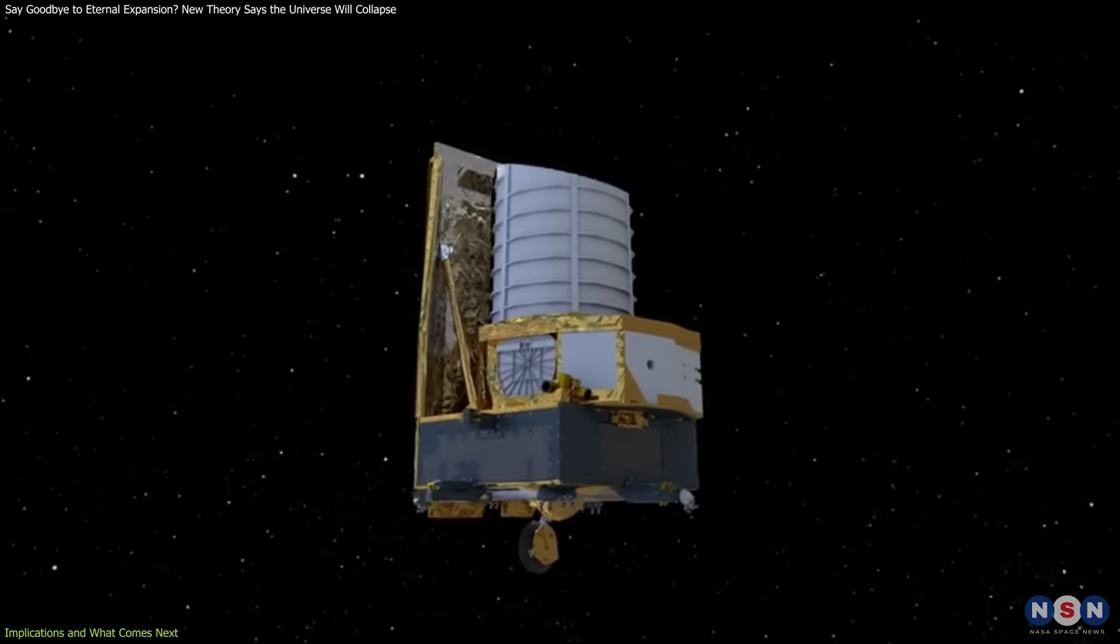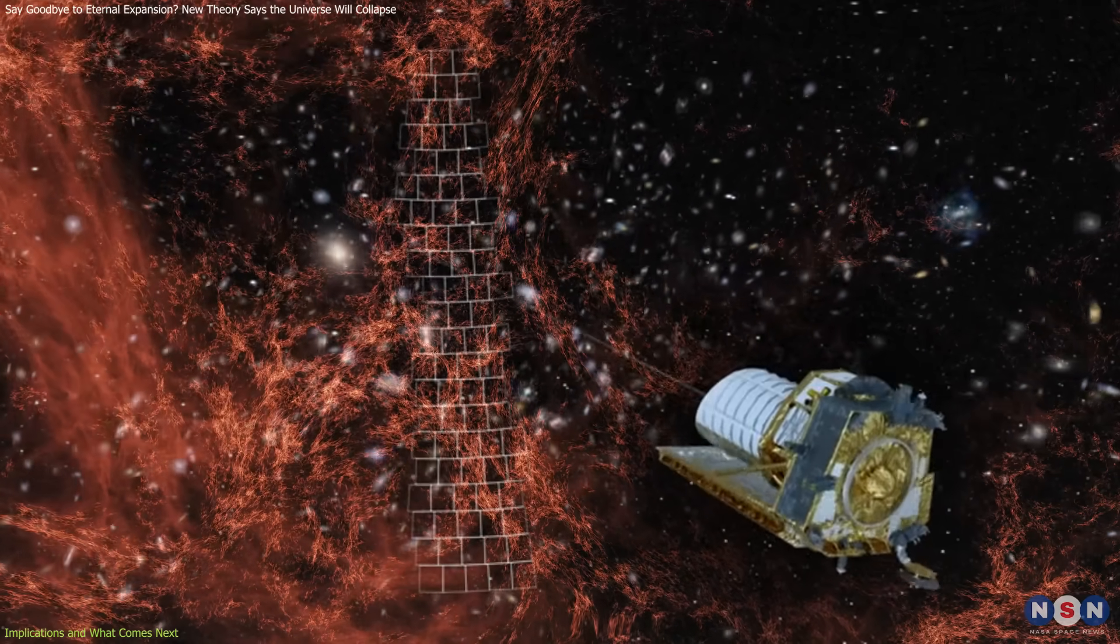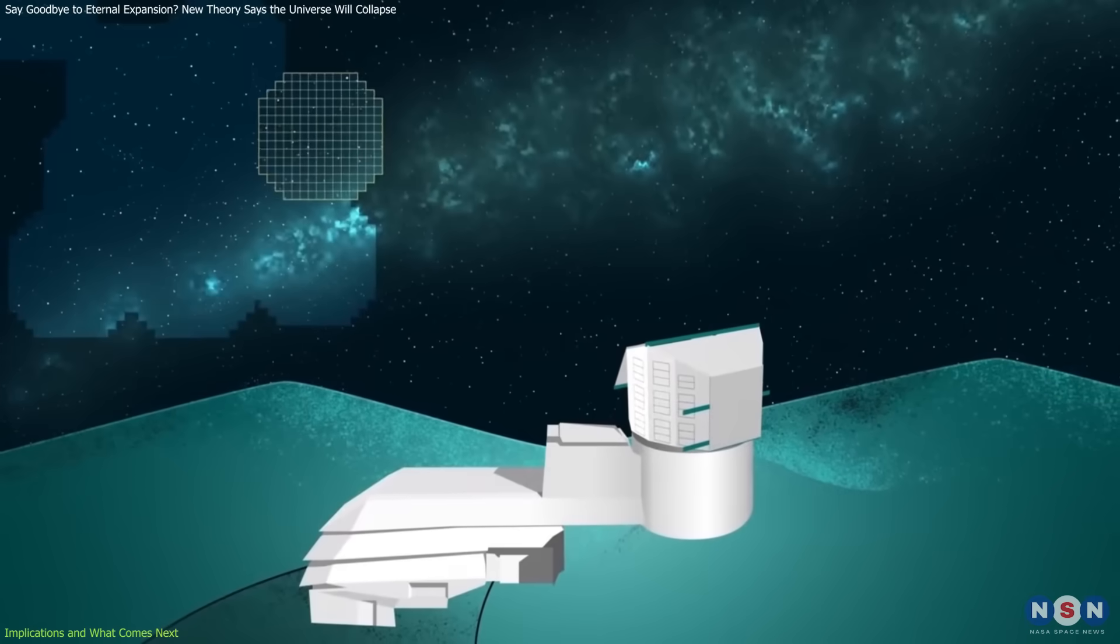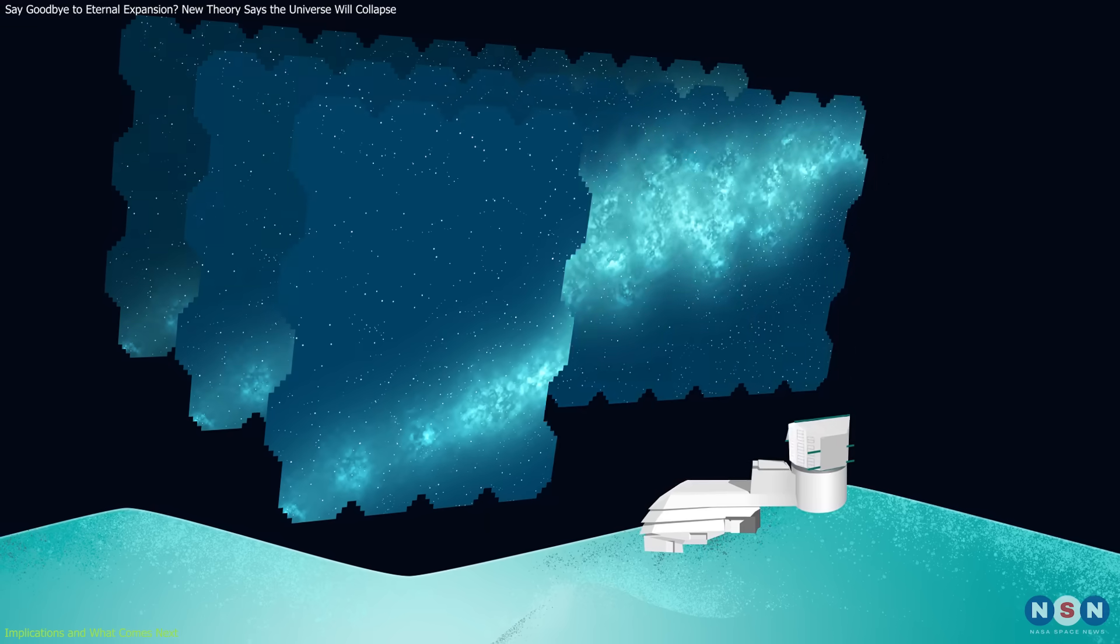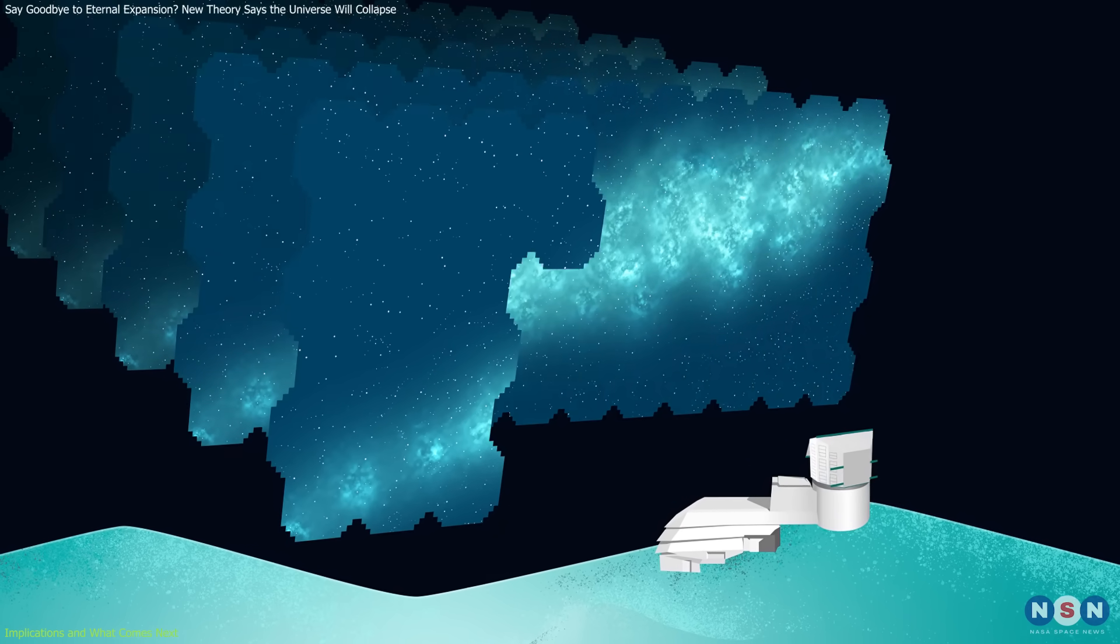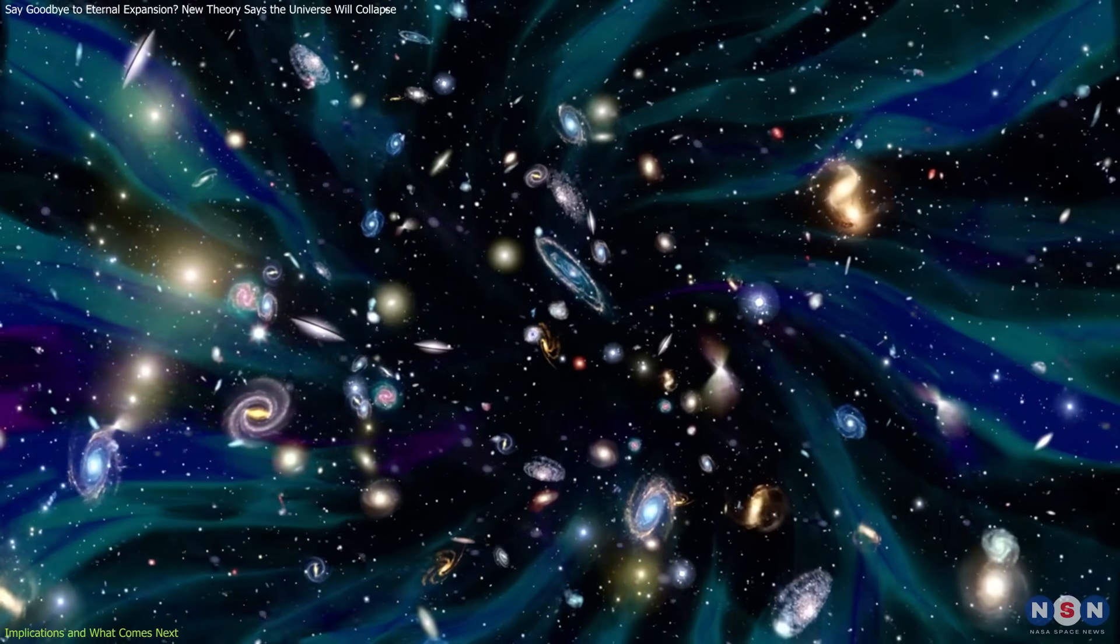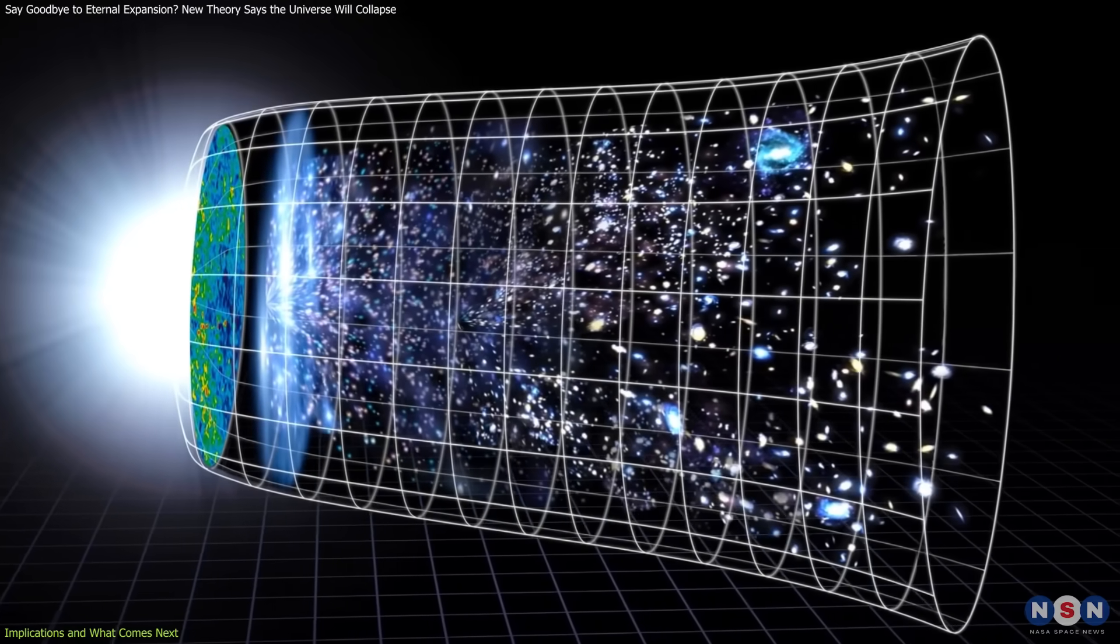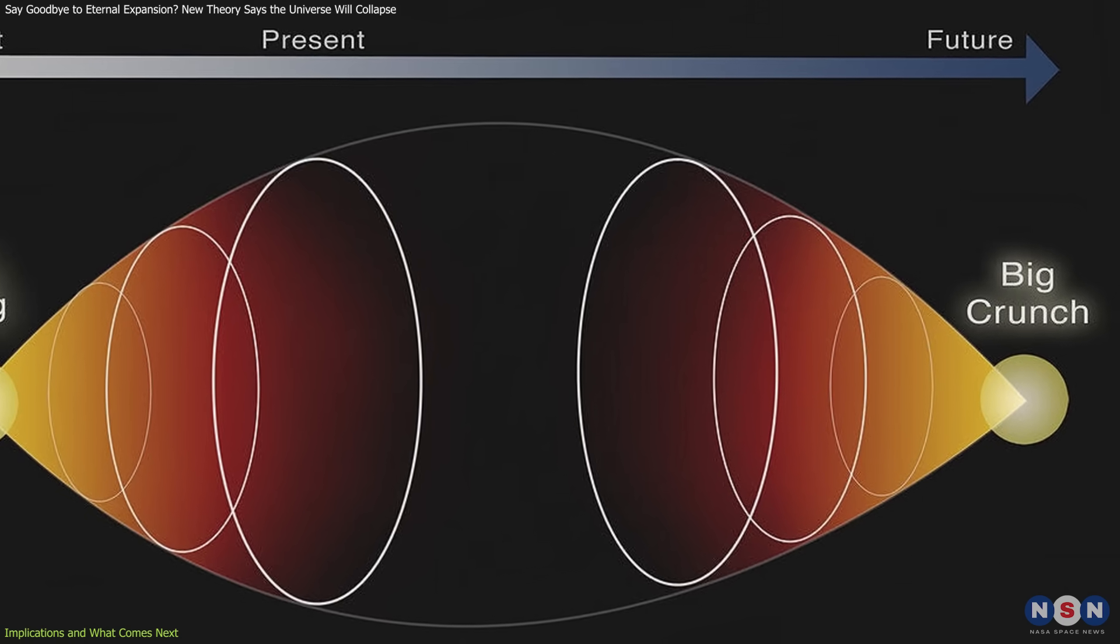Euclid is already operational and mapping the geometry of the universe with unprecedented precision. The Rubin Observatory, with its Legacy Survey of Space and Time (LSST), will track changes in the sky night by night. These tools will help refine the value of W and reveal whether dark energy is truly evolving or holding steady. If dark energy stays constant, the standard model holds. But if it shifts, the Big Crunch theory gains support.